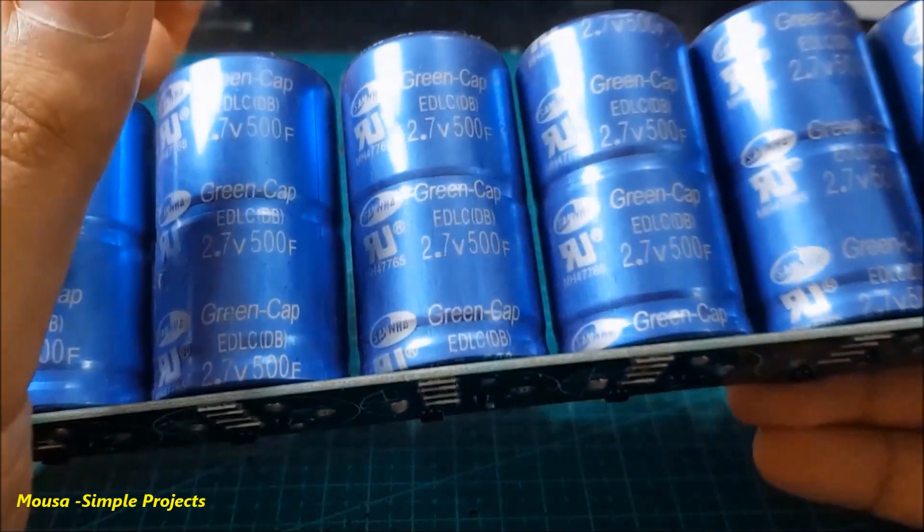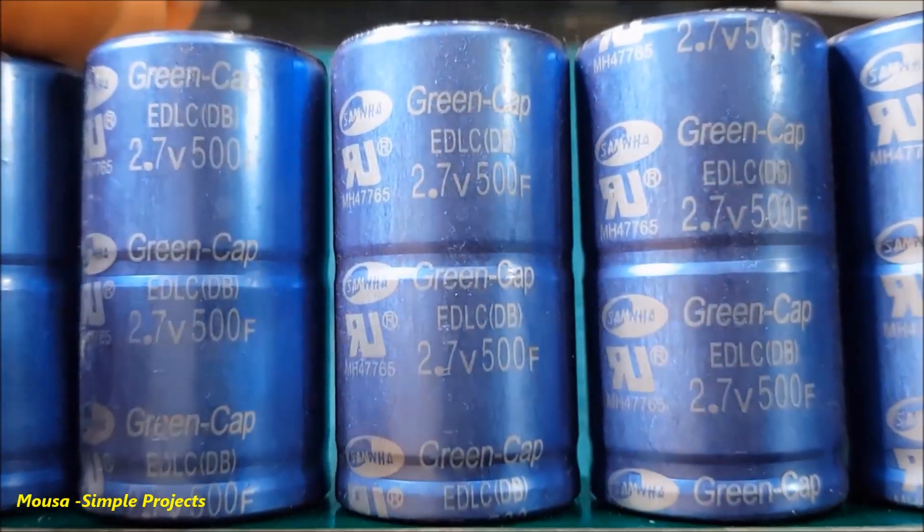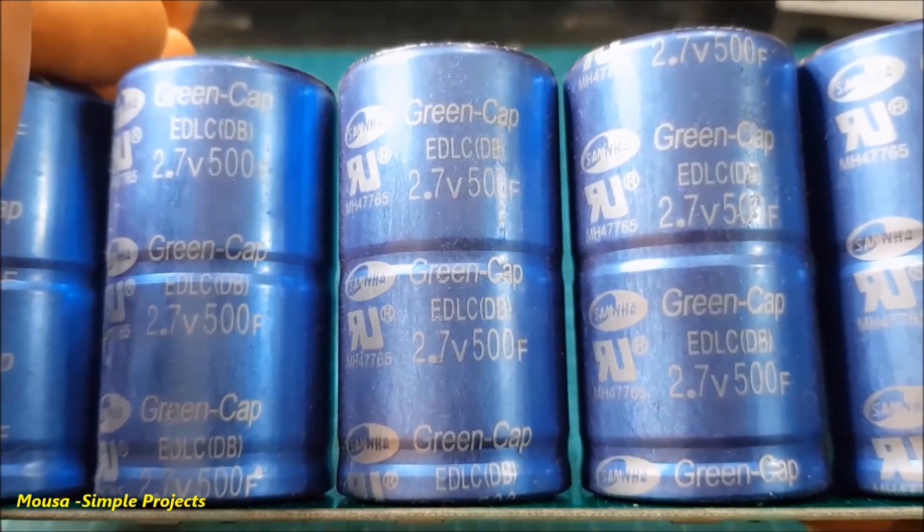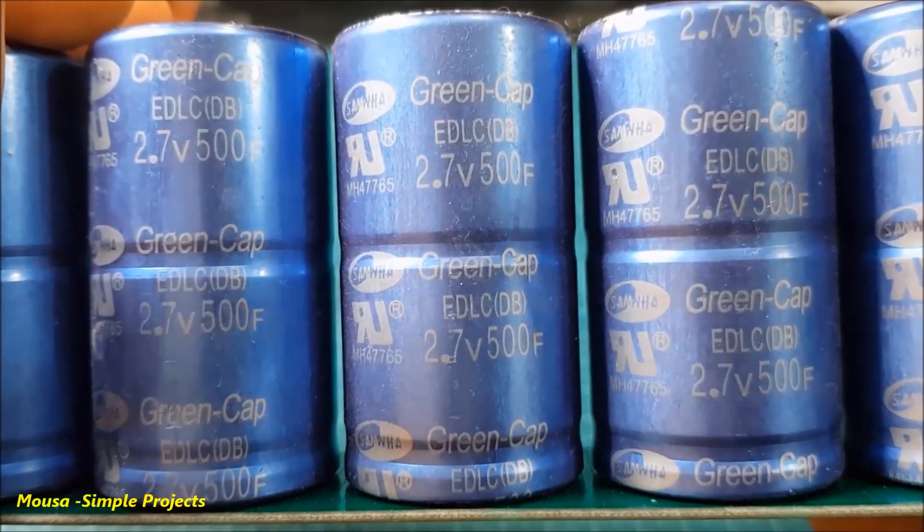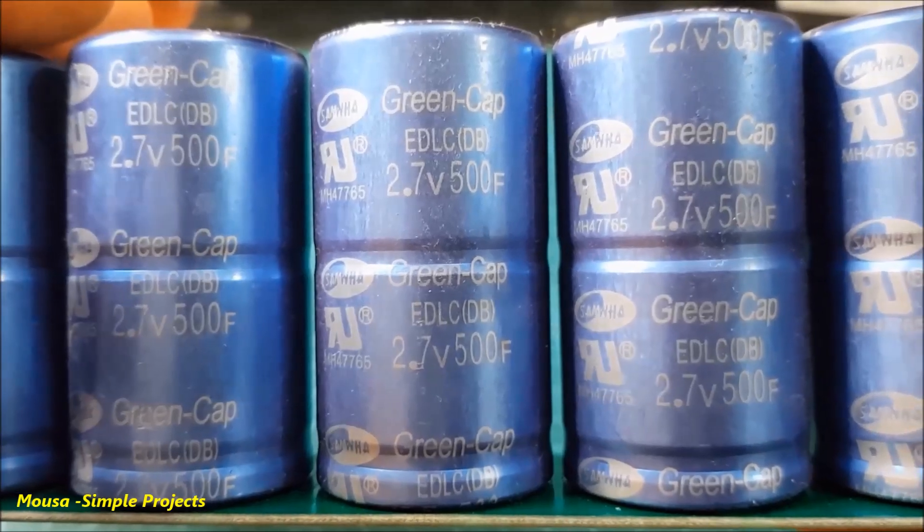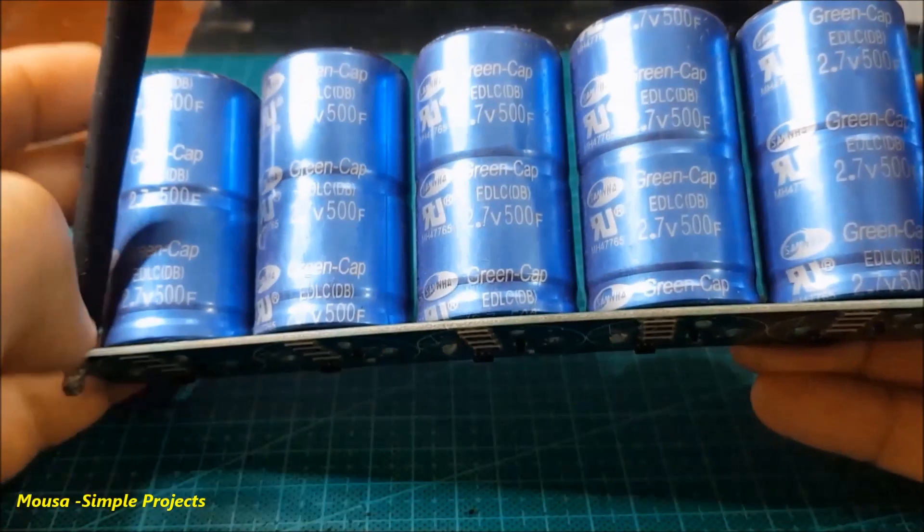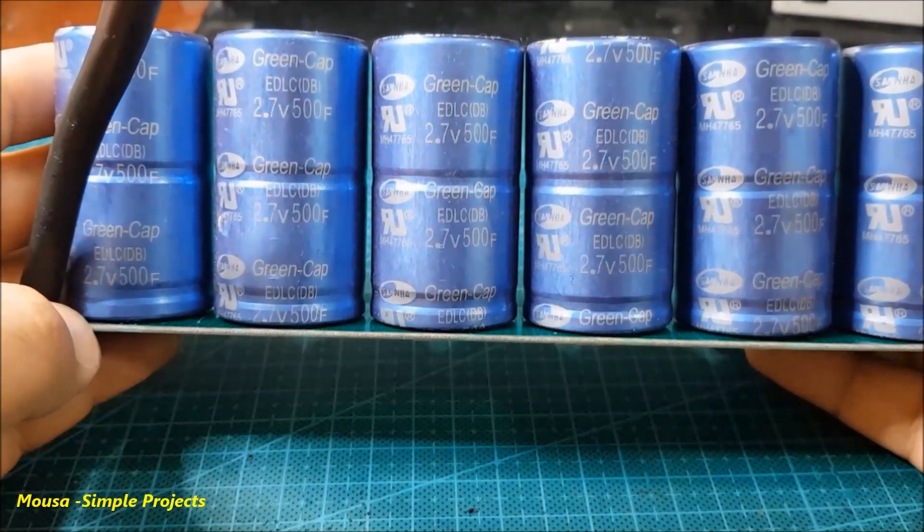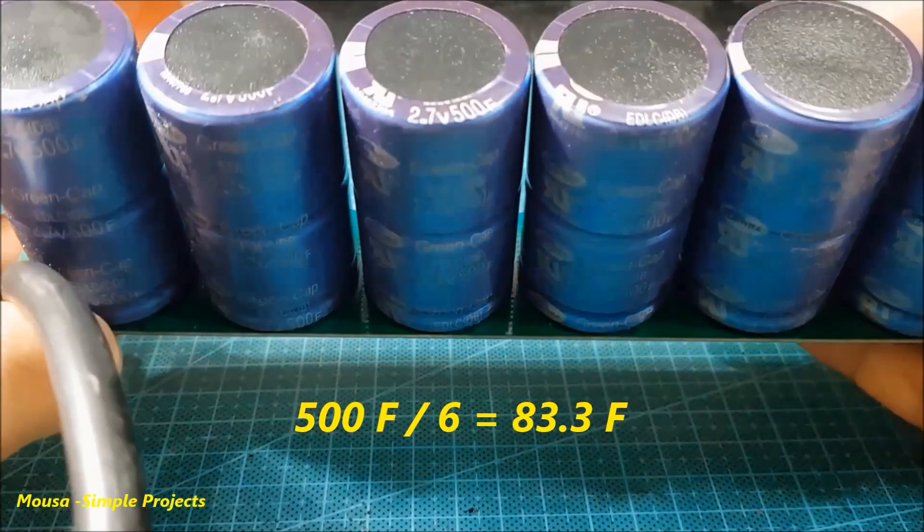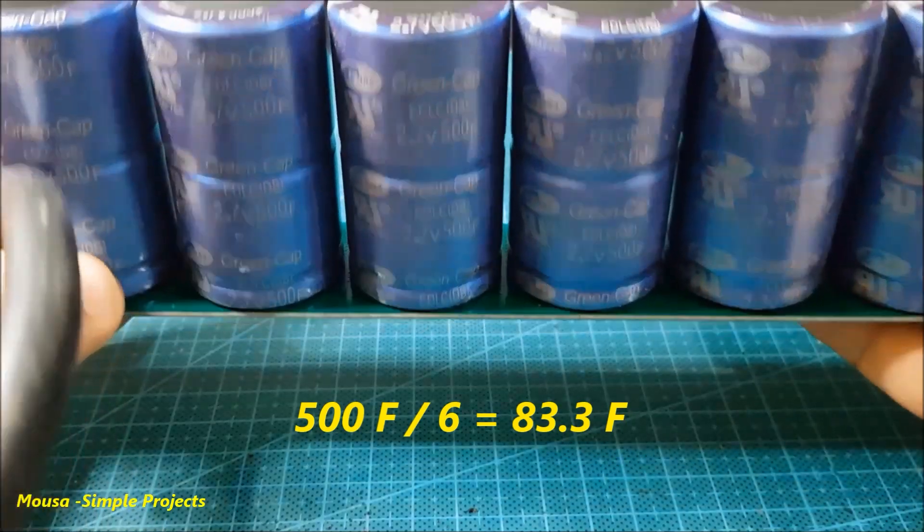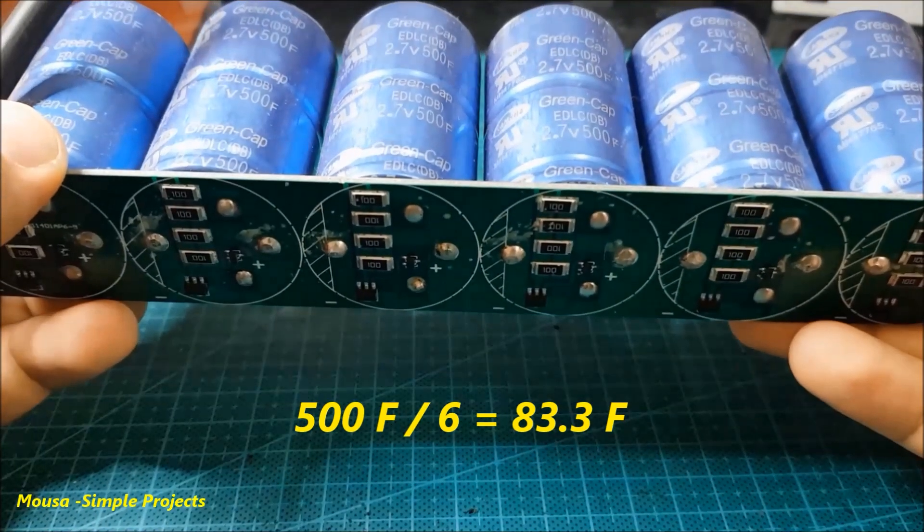The capacitors are 2.7 volts, so the total voltage of the bank will be 16.2 volts. But the total capacitance, because they are connected together in series, is 500 farad divided by 6, equal to 83.3 farads.